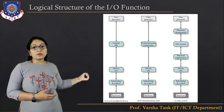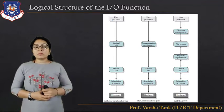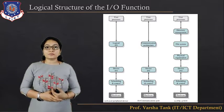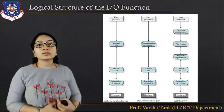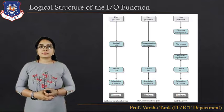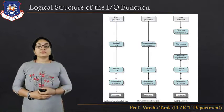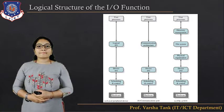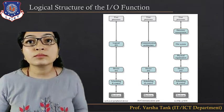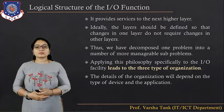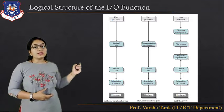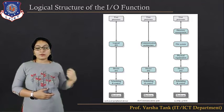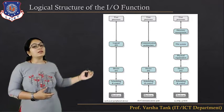In the second organization — the communication port — the scheduling and control layer and device IO layer remain the same, but the logical IO is replaced by communications architecture. The third type is the file system organization.